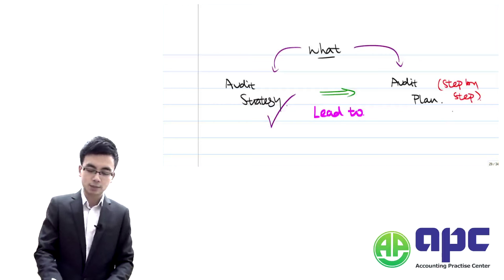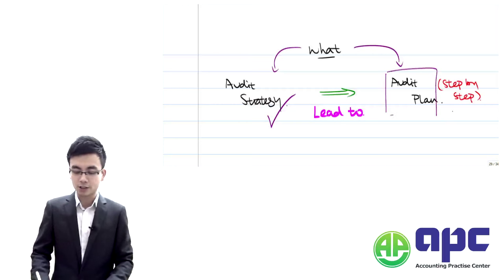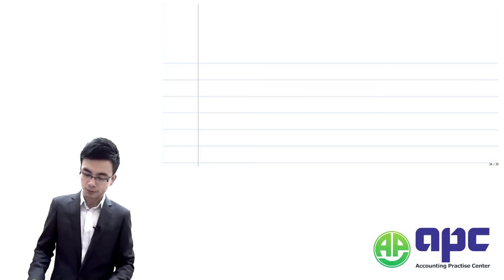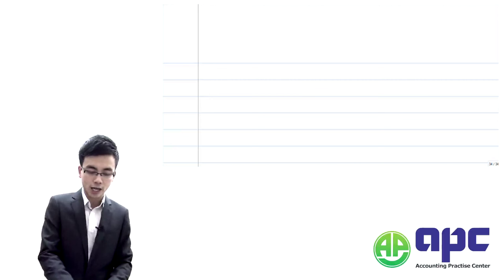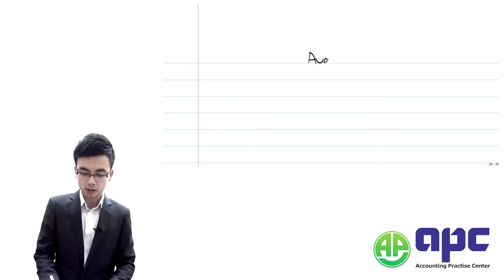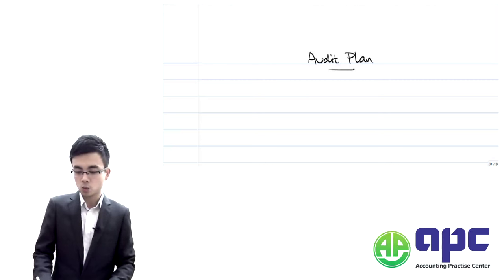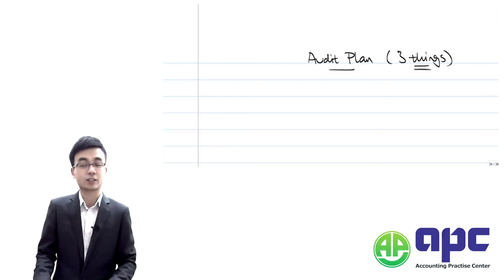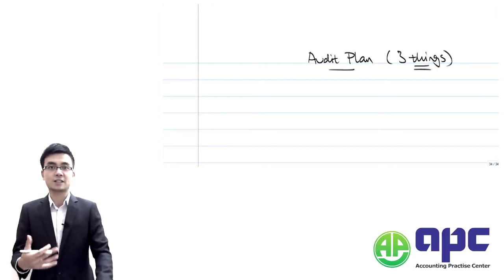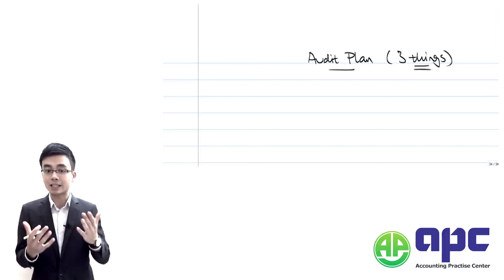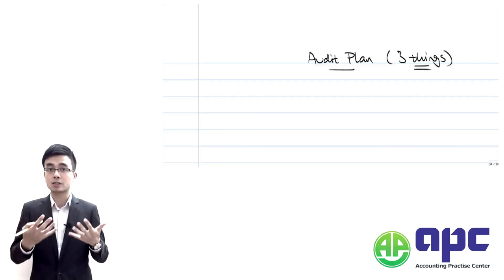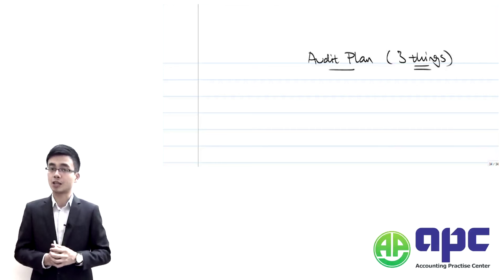When setting up the audit plan, it's not that difficult. There are three things or three steps we're going to undertake in setting up the detailed audit plan — meaning how the auditor would check the financial statements later on, giving us guidance.